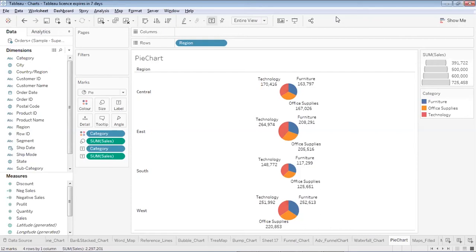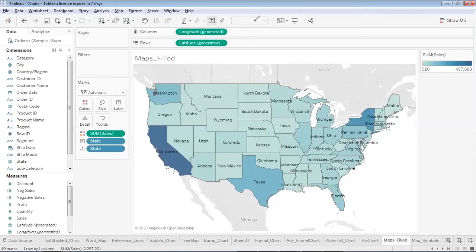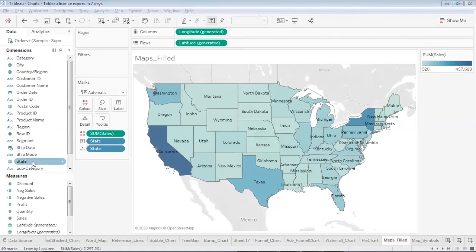That's it for pie charts. Next, we'll see how to create maps. Tableau has a great feature for showing geographical fields on maps — not limited to a few countries. You can show any country map and cities for any country. Here is an example of a map on a Tableau workbook using the geo field State.